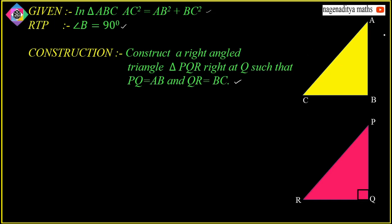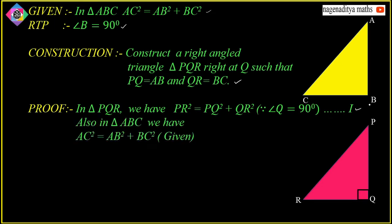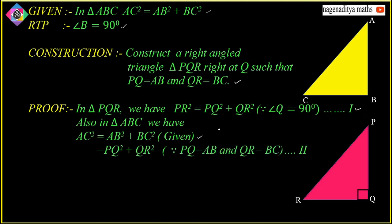In the proof: in triangle PQR, PR² = PQ² + QR², since PQR is a right angle triangle with right angle at Q — this is equation 1. Also, in triangle ABC, AC² = AB² + BC², which is given. Replacing PQ by AB and QR by BC, we get AC² = PQ² + QR² — this is equation 2.